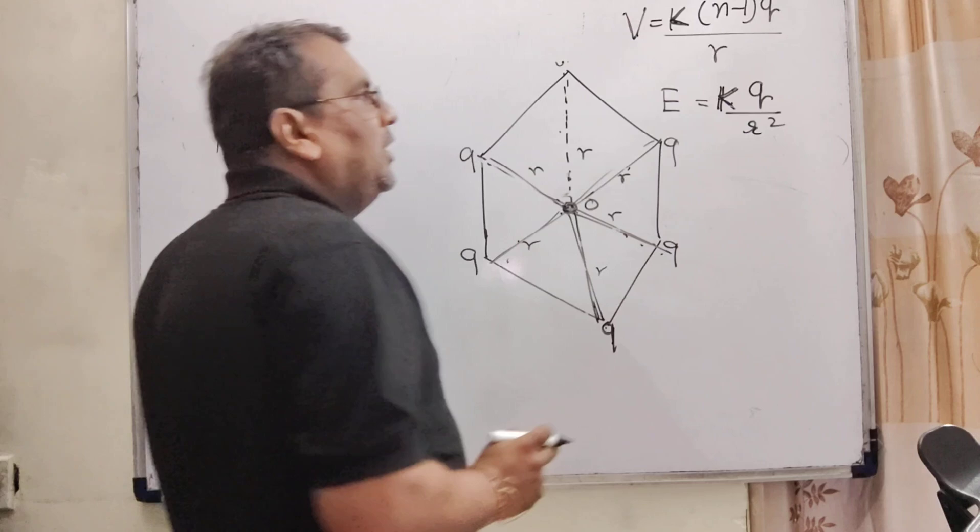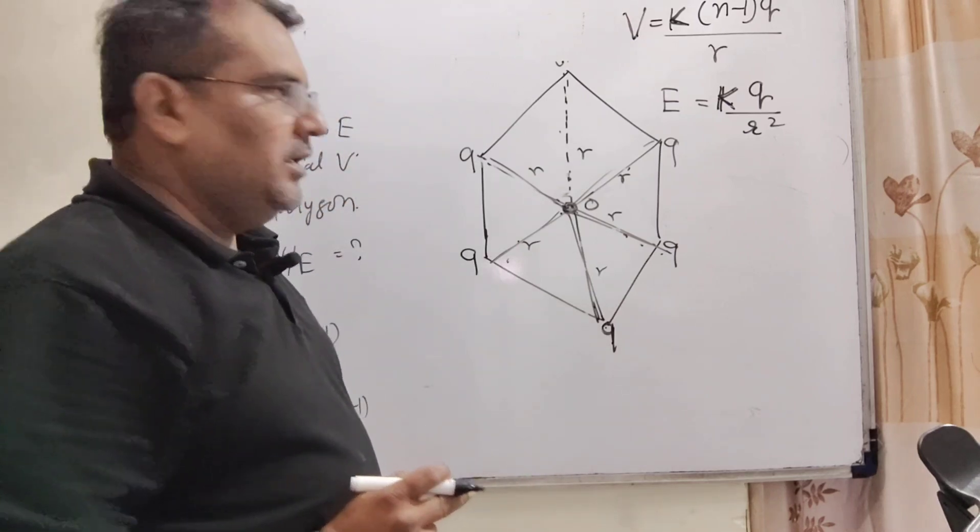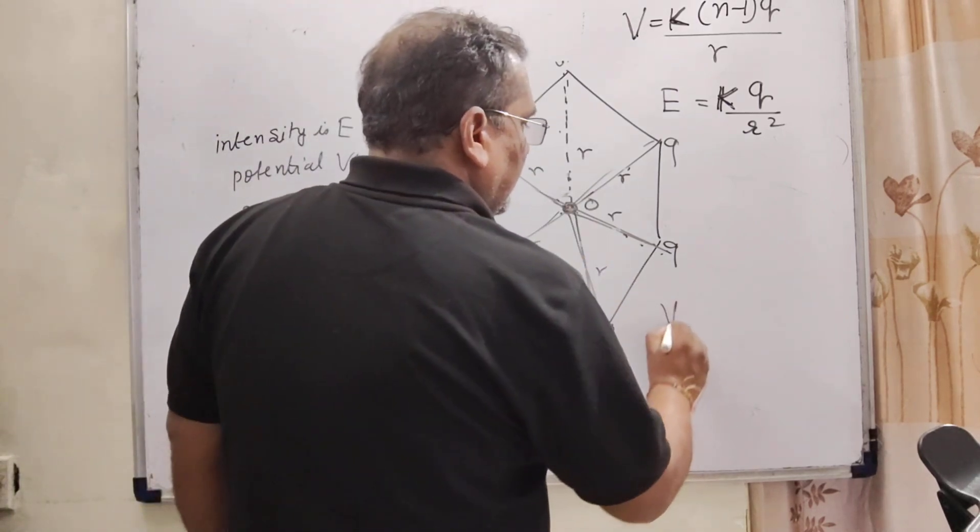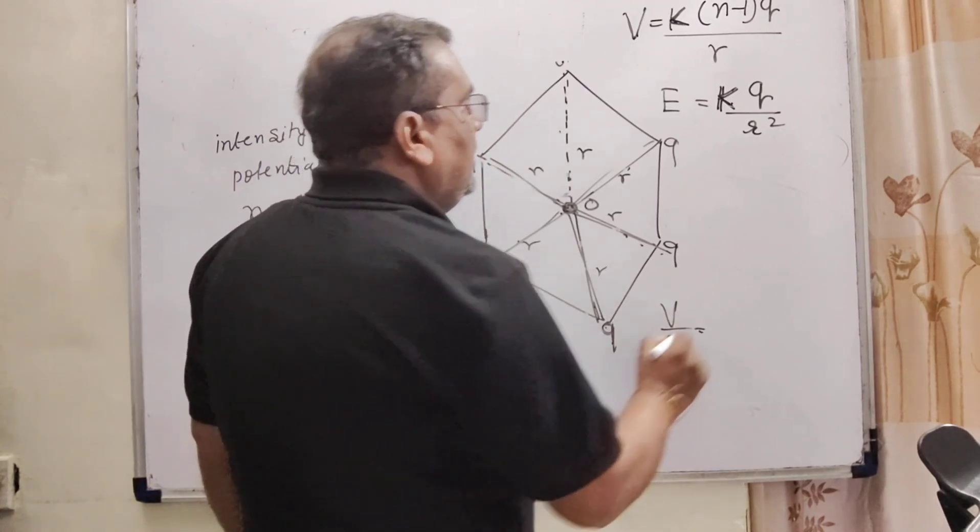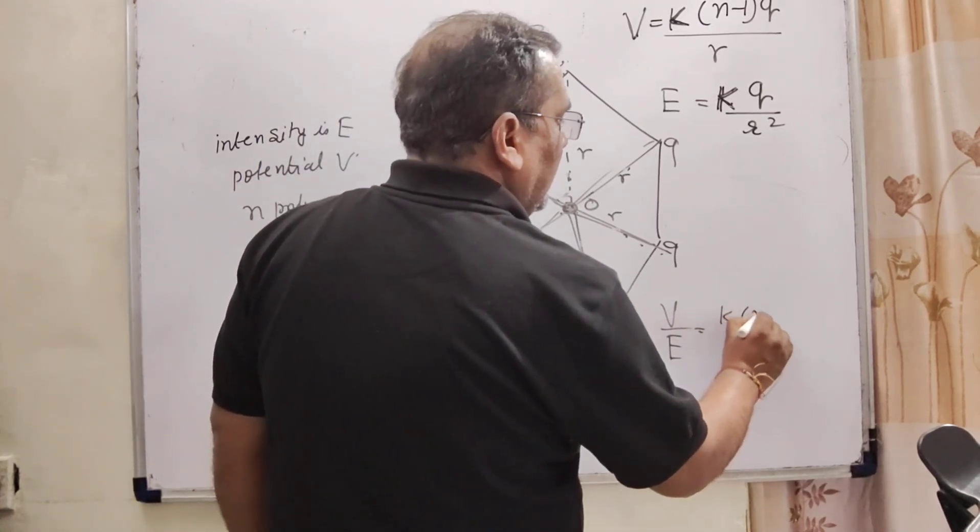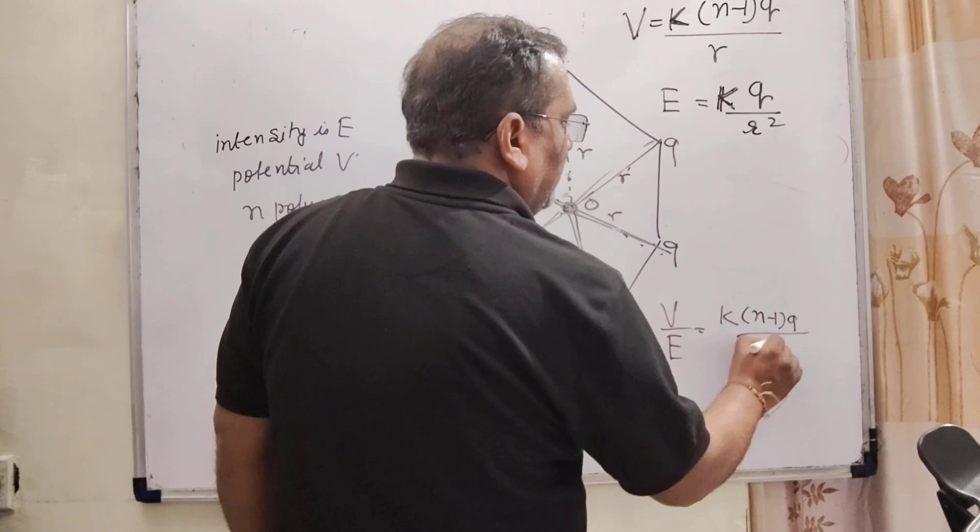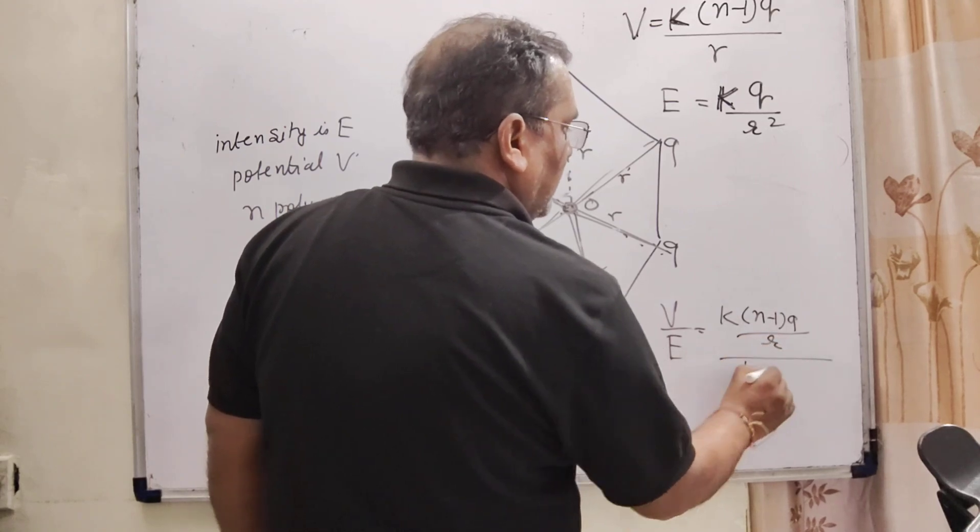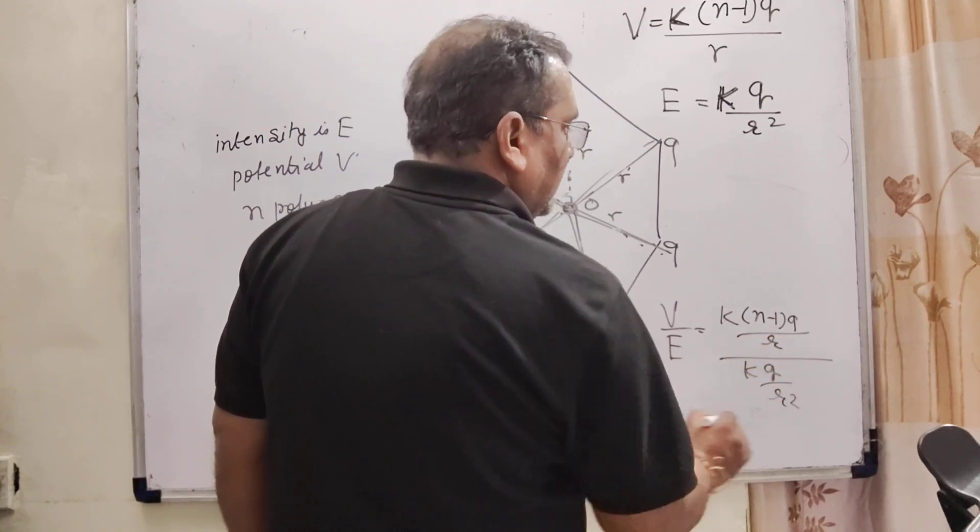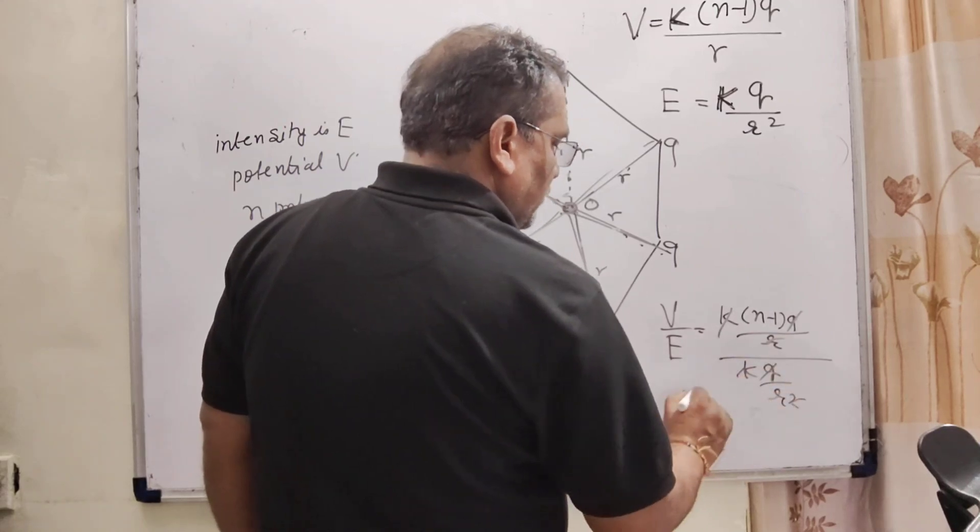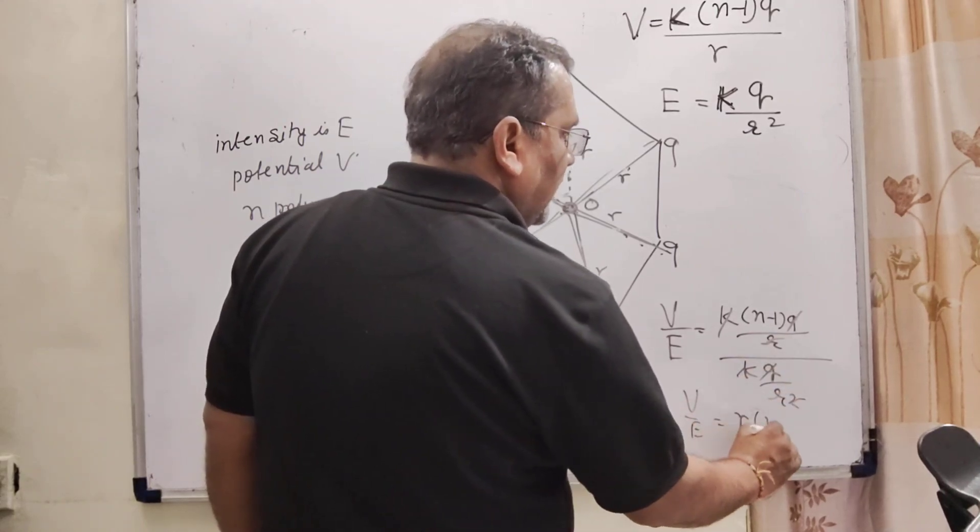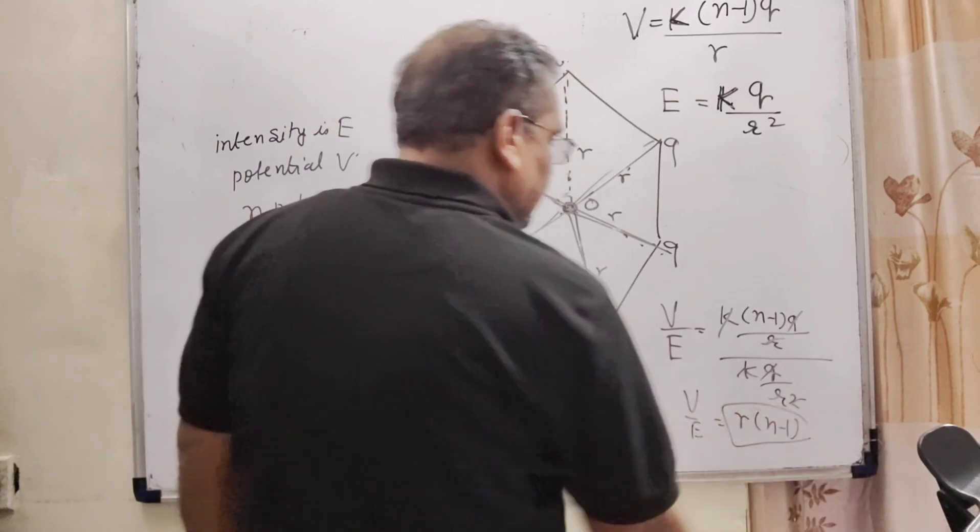And if we have to calculate V by E, k n minus 1 q by r upon k q r square. This k q cancel out. This one r cancel out. So, V by E is equal to r into n minus 1. That is the answer.